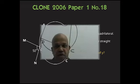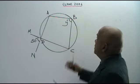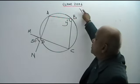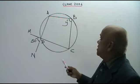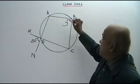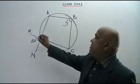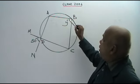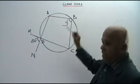Here is another clone question based on the year 2006. You are given a cyclic quadrilateral ABCD, where MDC and ADAN are straight lines. You are asked to find the value of Y.